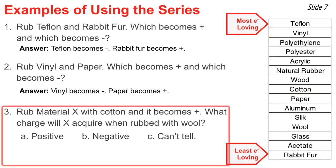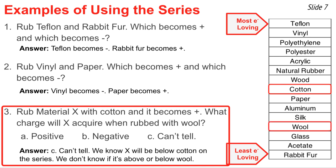In question three, material X is not in the table. When you rub it with cotton, you observe that material X becomes positive. This tells you that material X is lower in the table than cotton, but you don't know how low. So there's no way to predict whether it would become positive or negative when rubbed with wool. If material X was below cotton but above wool, then it would become charged negatively when rubbed with wool. But if it was below both cotton and wool, material X would be charged positively when rubbed with wool.